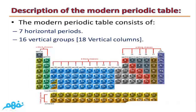The modern periodic table consists of sixteen vertical groups and eighteen vertical columns. The reason for the difference between the number of columns and the number of groups is group eight, which is found inside the D block. This is because group eight consists of three vertical columns, so we have sixteen groups but eighteen columns.